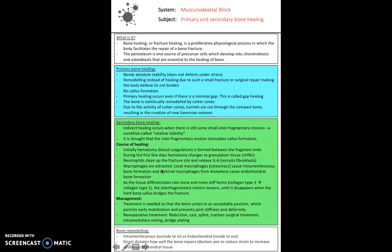What's really important is secondary bone healing. This is where we have relative stability and need to form a callus in a several stage process. First we have a hematoma where blood forms between the fragment ends. During the first few days that hematoma changes to granulation tissue which is stiffer. Neutrophils flood to the site to clean up and release interleukin-6, which recruits fibroblasts and macrophages. There are two types of macrophages: local macrophages called osteomacs cause intramembranous bone formation, and external macrophages from elsewhere cause endochondral bone formation. We're forming a soft callus which eventually develops into a hard callus by laying down collagen type 3 which eventually becomes collagen type 1. This hard bony callus bridges the fracture between the two broken fragments.